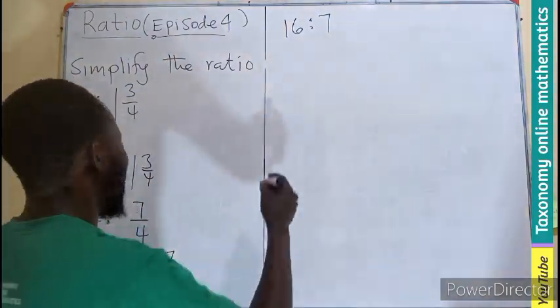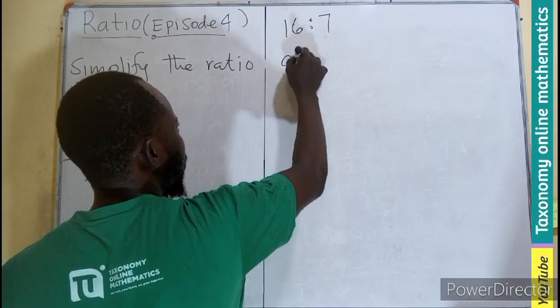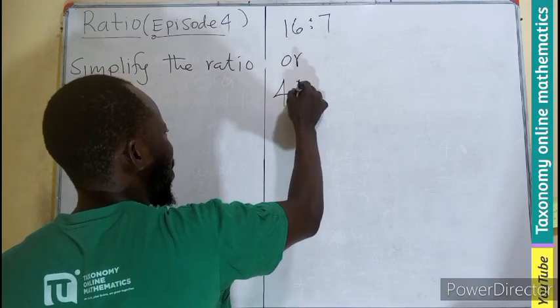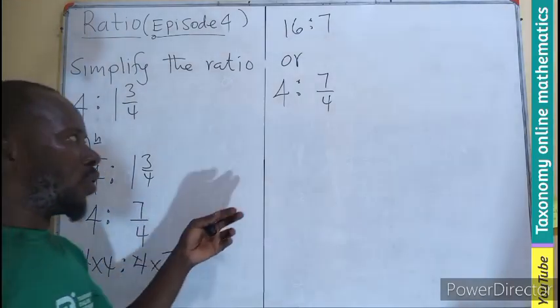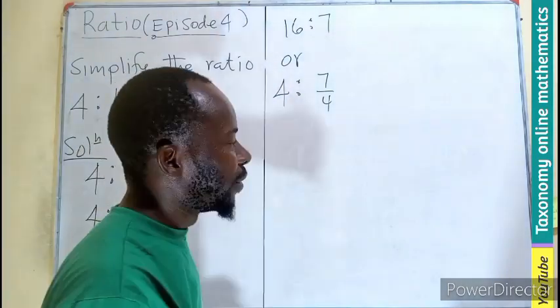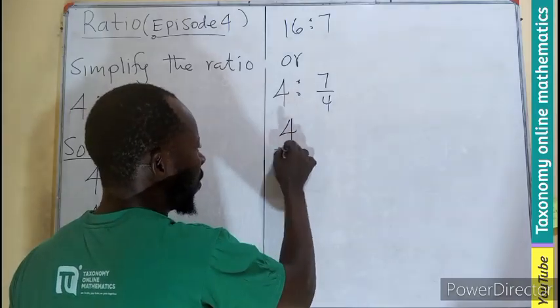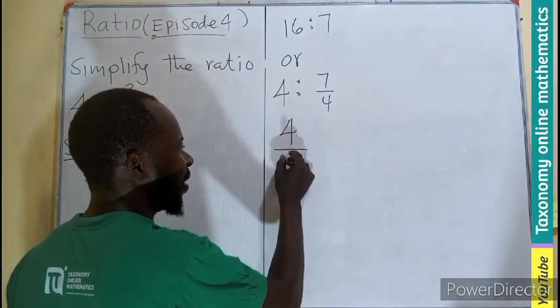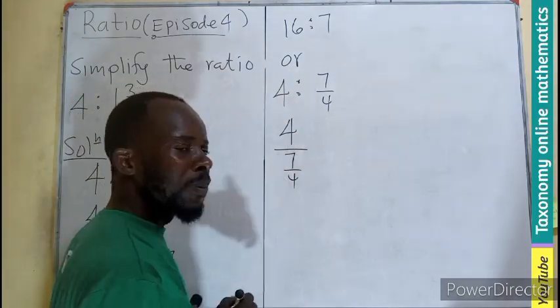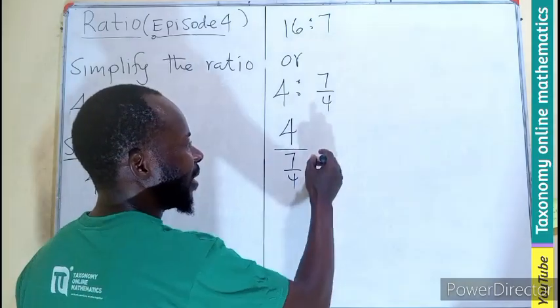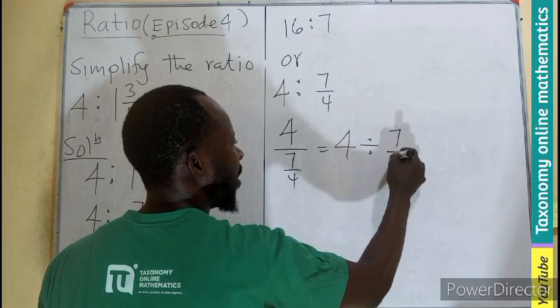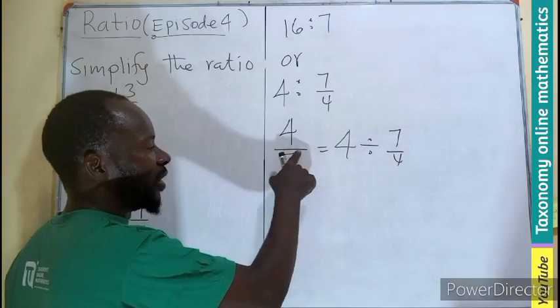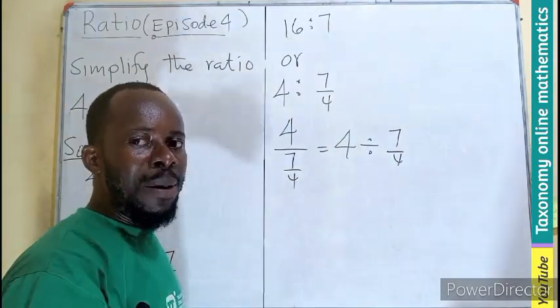Or we can also write it as a fraction, in the sense that 4 whole number 7 on 4. After converting, we also know that this is a fraction, so that means 4 divided by 7 on 4.